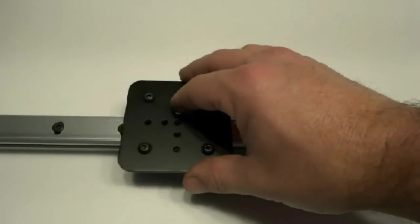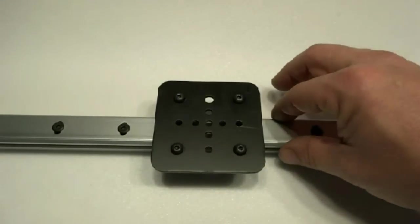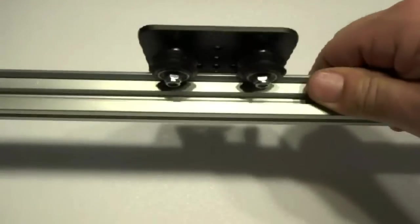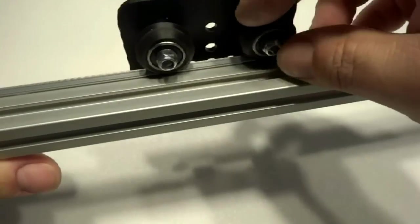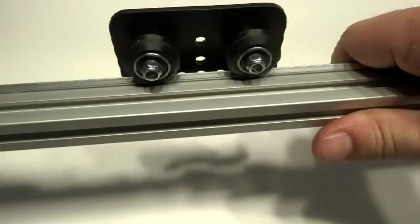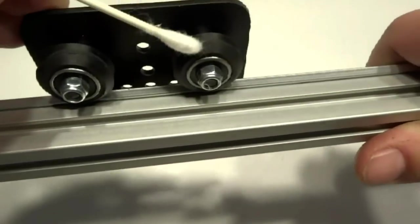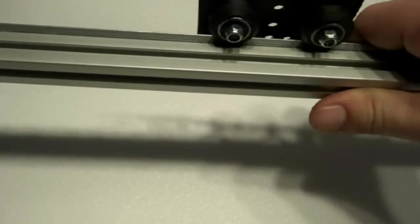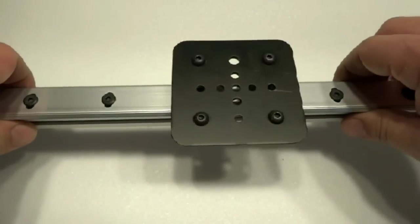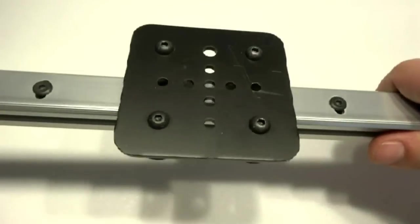One thing to keep in mind is that you want to keep the rails lubricated as much as possible. Also, I like to take a Q-tip and make sure I clean out any debris that may be in the wheel. It just has to stay clean if you want a smooth operation. The rule of thumb for tightness for me is that if I can hold this at a 45 degree and it rolls down by itself, then I know that it's good.